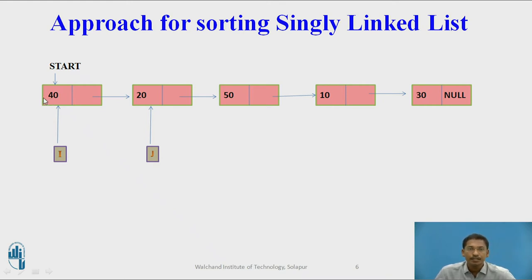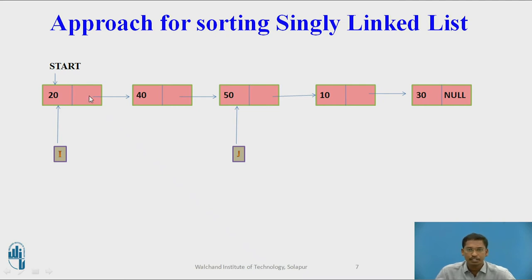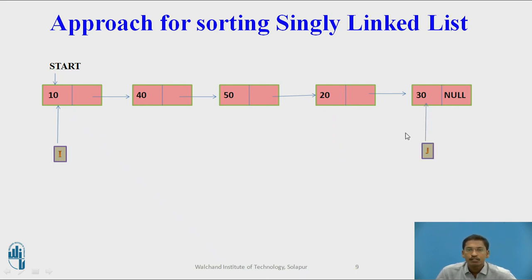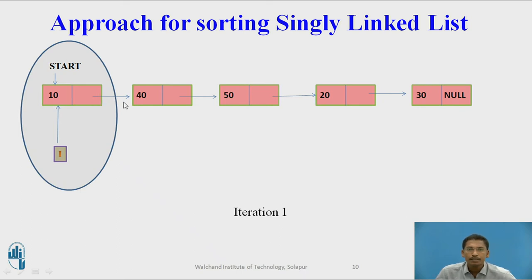In the first comparison, 40 is compared with 20. 40 is greater than 20, so swapping is done. 20 will now be the first node and 40 will now be the second node. j moves forward. Again, 20 is compared with 50 — 20 is not greater than 50, so swapping is not done. j moves forward. 20 is compared with 10 — 20 is greater than 10, so swapping is done. 10 will be the first node and 20 will become j's node. j moves forward. 10 is compared with 30 — 10 is not greater than 30, so swapping is not done. j moves to null. After iteration one, the first node, which is 10, is getting sorted.